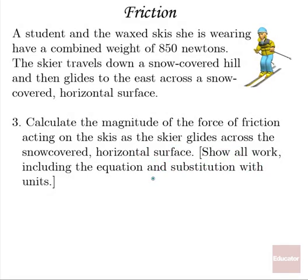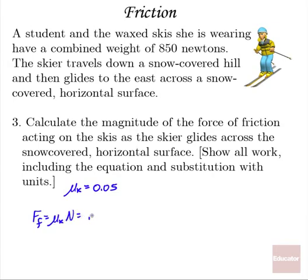Next, calculate the magnitude of the force of friction acting on the skis as the skier glides across the snow-covered horizontal surface. The key is to find the coefficient of friction. Since it's waxed skis on snow and they're sliding, we use the kinetic coefficient of friction, which is approximately 0.05. The frictional force is the coefficient of friction times the normal force: 0.05 times 850 newtons, which gives about 42.5 newtons.